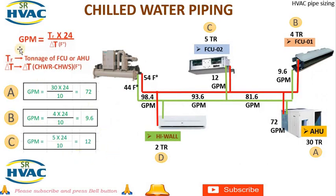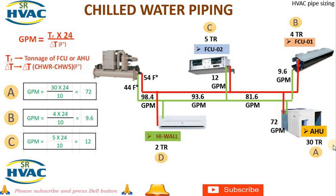We need to know the GPM for these pieces of equipment. For the calculation of GPM for the AHU and FCUs, we use the formula: GPM = (Tons of Refrigeration × 24) ÷ ΔT, where ΔT is the difference in temperature between the chilled water return and chilled water supply in degrees Fahrenheit. Since we know the capacity of the FCUs, high-wall unit, and AHU in tons of refrigeration, we will apply these values in this formula to calculate GPM.